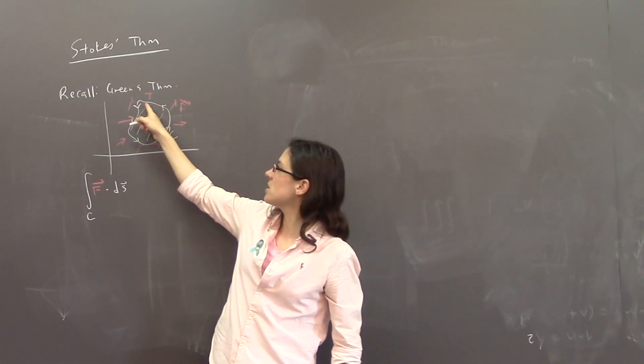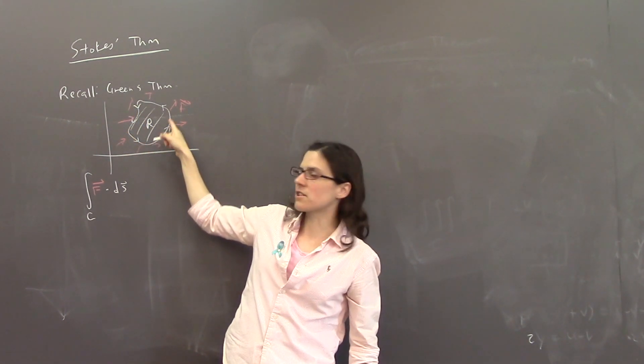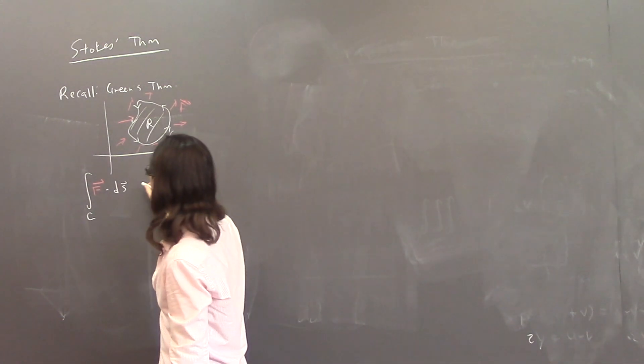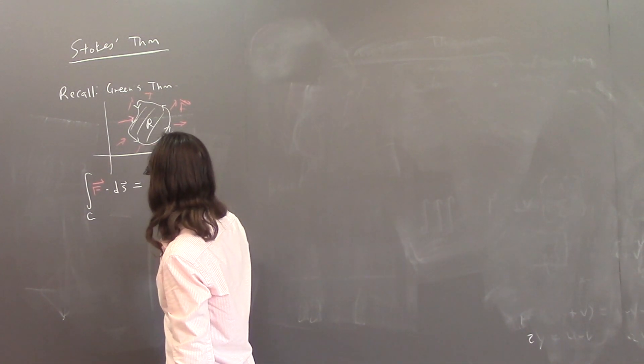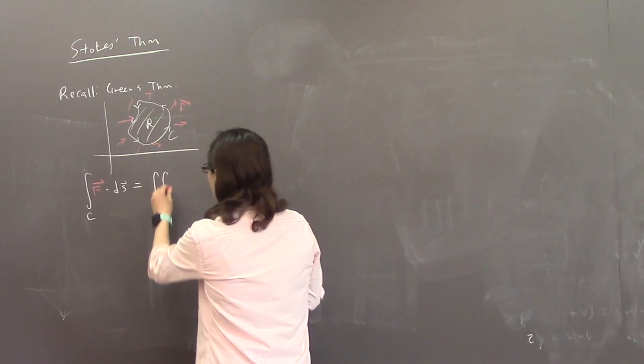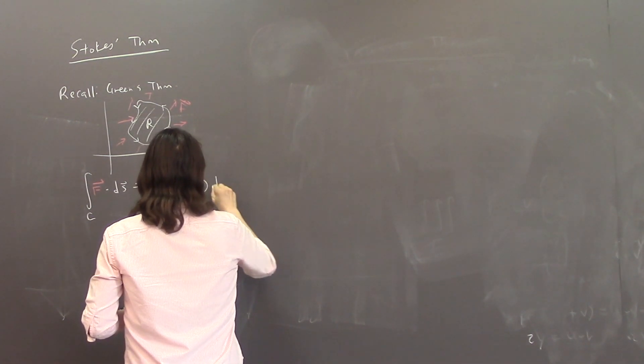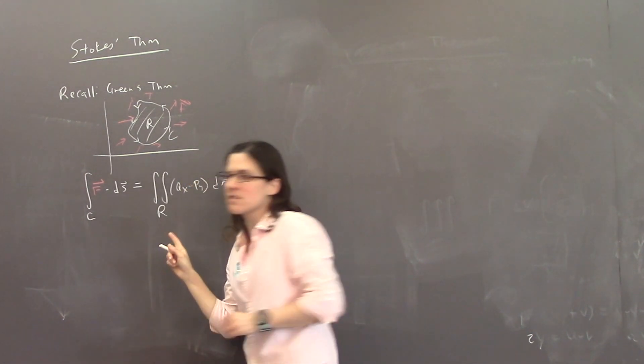That means the circulation around here, how much the vector field is helping you or hurting you as you go around this counterclockwise. If you prefer, you can calculate the double integral of, well,